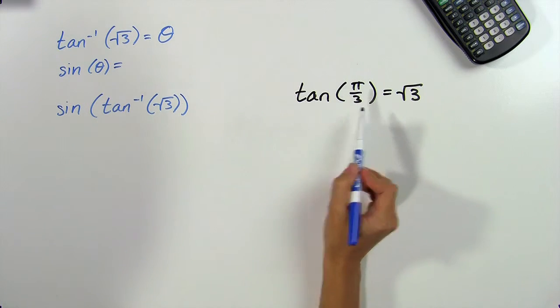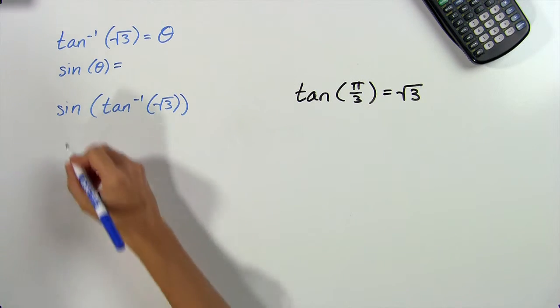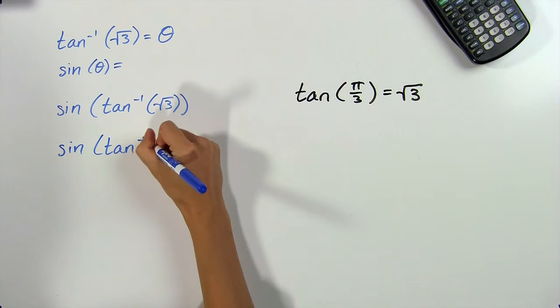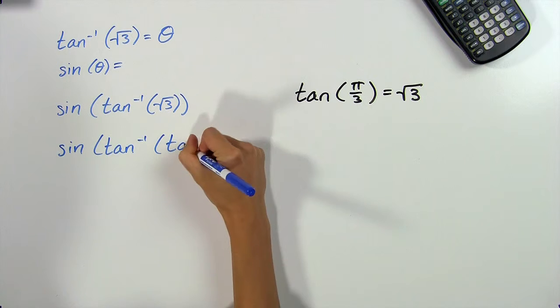Let's substitute this tangent for the square root of 3 here. We'll get the sine of the arc tangent of the tangent of pi thirds.